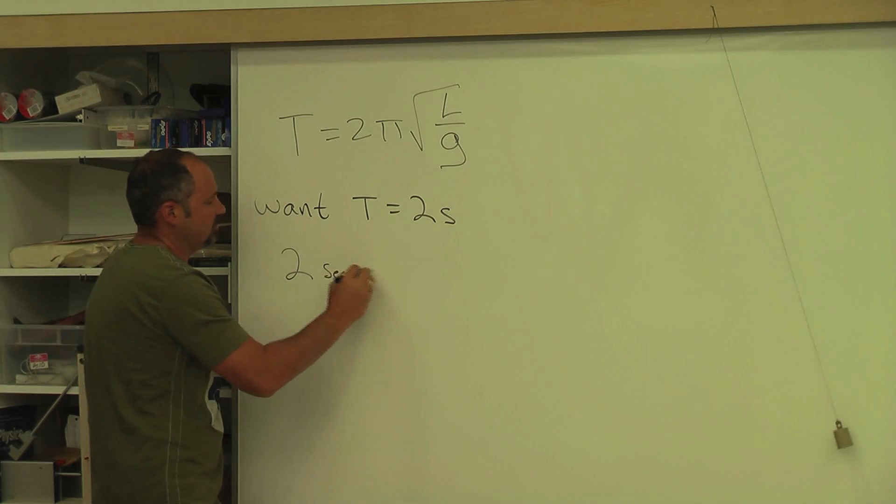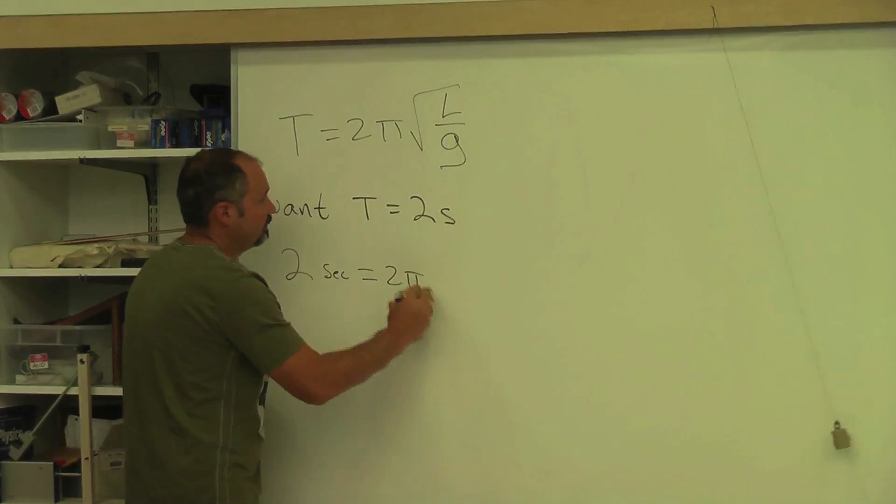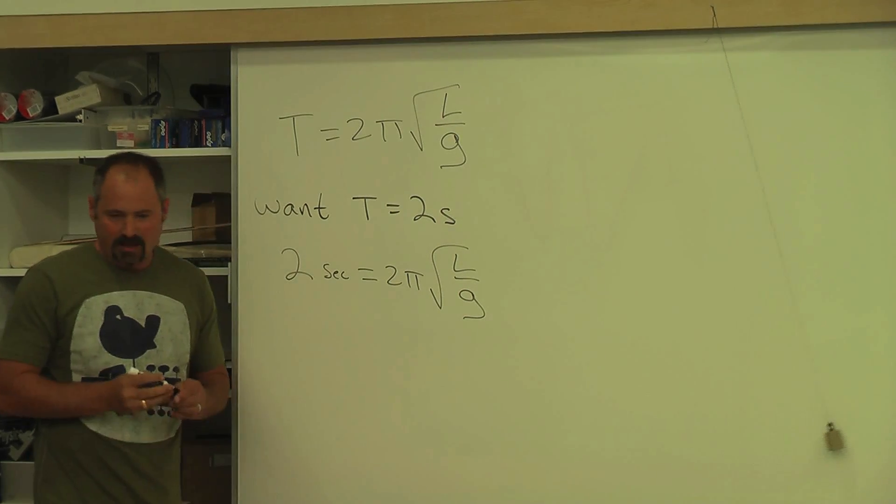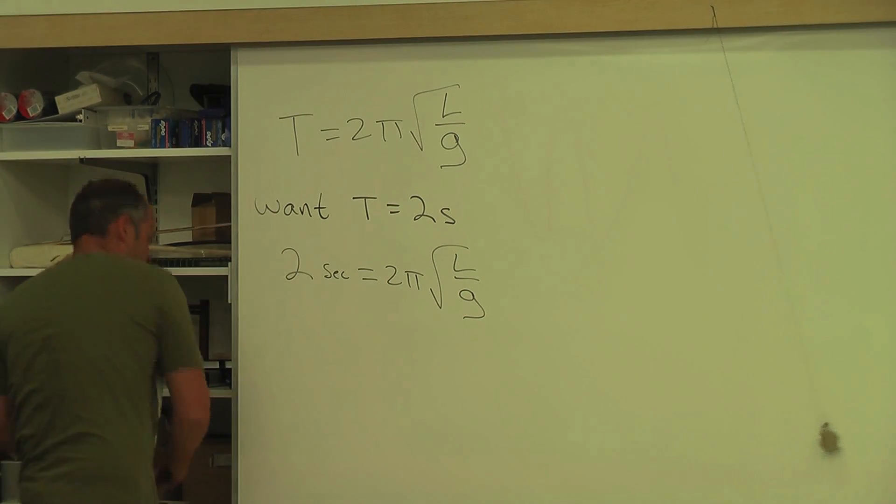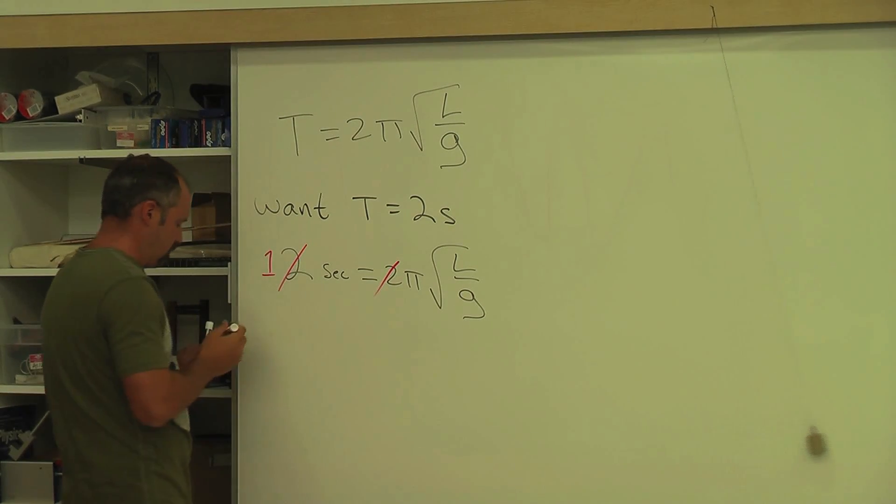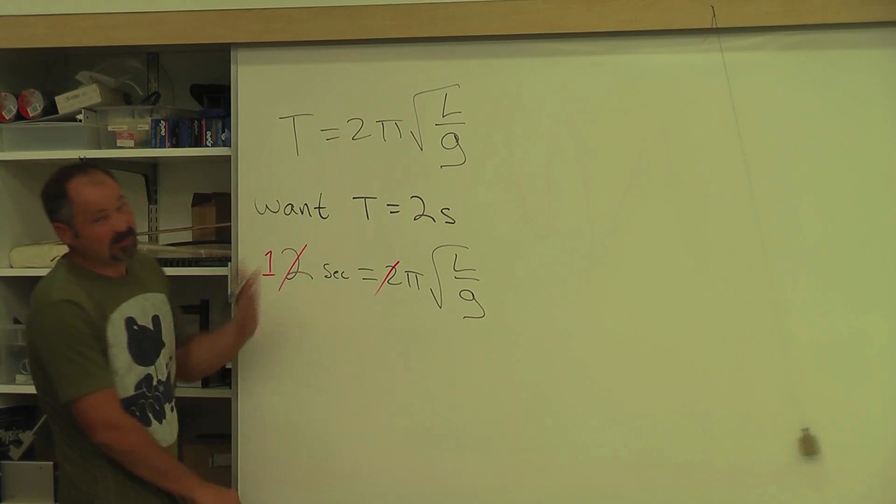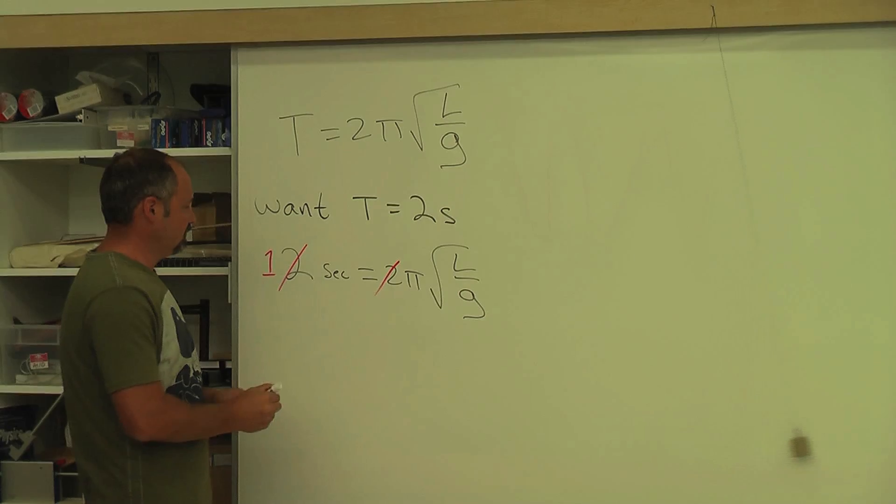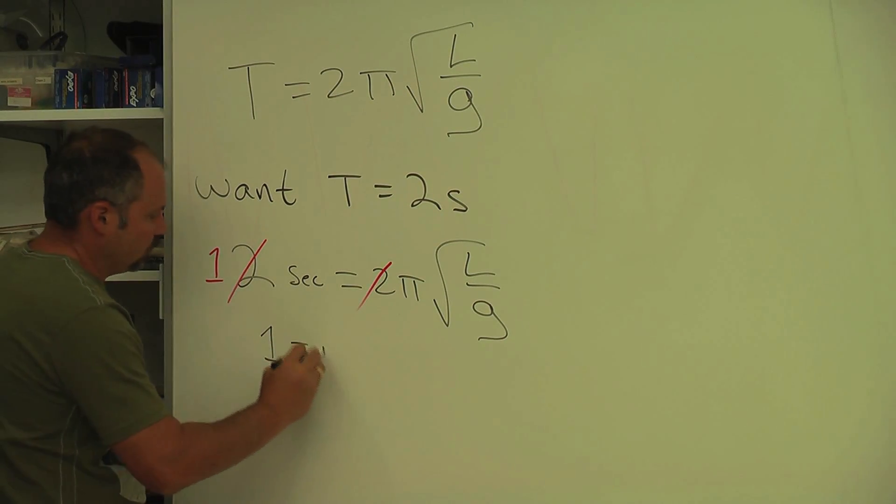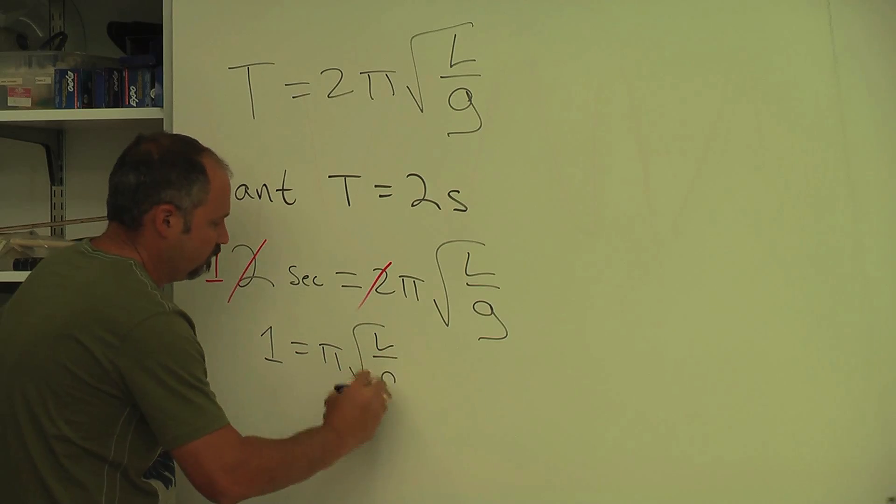Two seconds equals two pi square root of l over g. And if we have that, we can then cancel a two from both sides. This is just a one now. In other words, I've divided by two from both sides. And so now I have one equals pi square root of l over g.